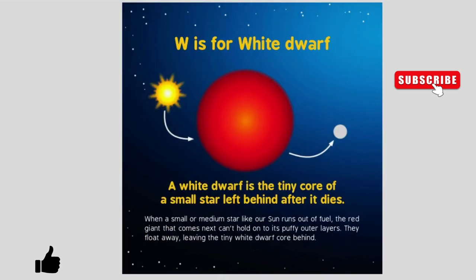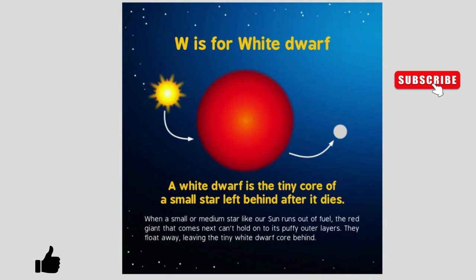W is for White Dwarf. A white dwarf is the tiny core of a small star left behind after it dies. When a small or medium star, like our Sun, runs out of fuel, the red giant that comes next can't hold onto its puffy outer layers. They float away, leaving the tiny white dwarf core behind.